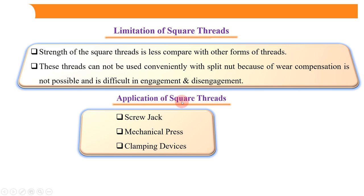What are the applications of square threads — for what kind of equipment are they used? Square threads are used in screw jacks. In screw jacks, square threads are used in mechanical processes and clamping devices. We can see square thread rods in so many mechanical process and clamping devices.